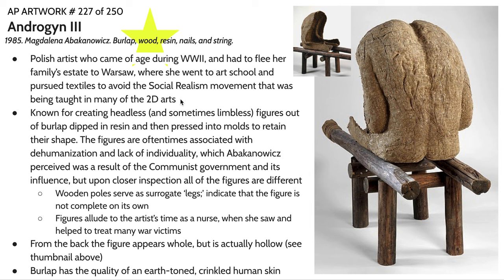The wooden poles in this sculpture serve as surrogate legs, indicating the figure is not complete on its own. This alludes to Abakanowicz's time as a nurse during World War Two, when she saw and helped treat many war victims who had lost limbs, as well as the event of her own mother getting her arm shot off by the Nazis. There's a sense of hollowness and emptiness being alluded to.